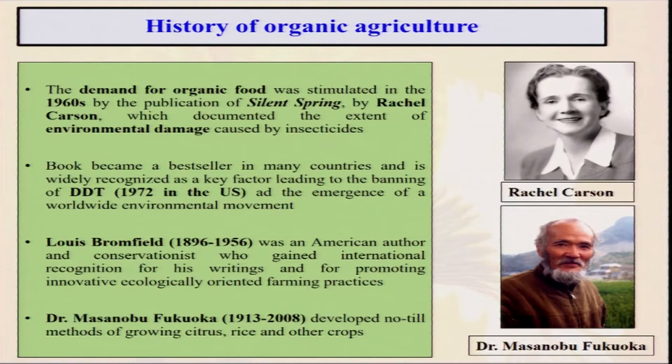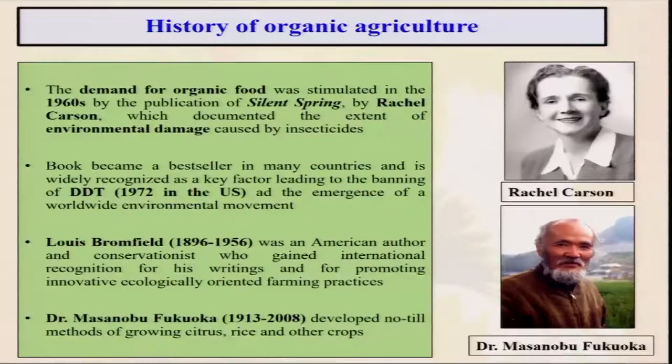The demand for organic food was also stimulated when a famous book was written by Rachel Carson — Silent Spring. Due to the indiscriminate use of DDT, not only for agriculture but other uses, lots of birds died. Silent Spring became a bestseller in many countries and was the main factor leading to the ban of insecticide DDT in 1972 in the United States. After that, organic farming gained new momentum as consumer preference emerged — people did not want pesticide residue-laden crops.